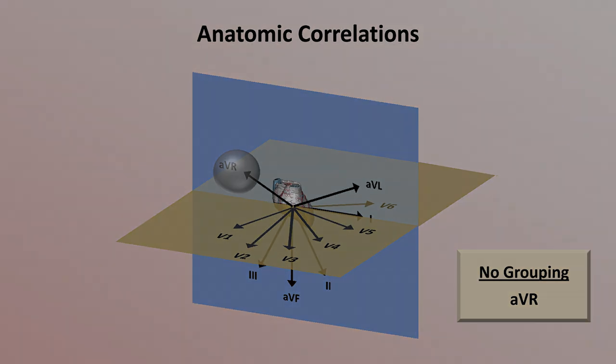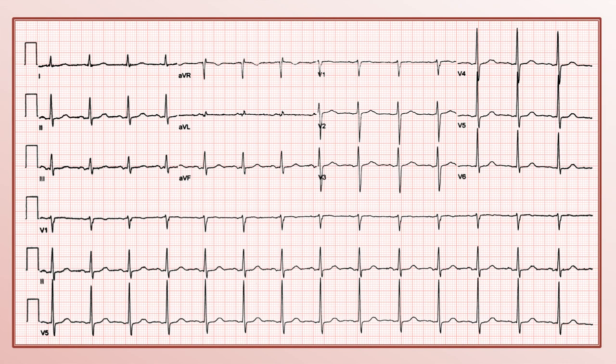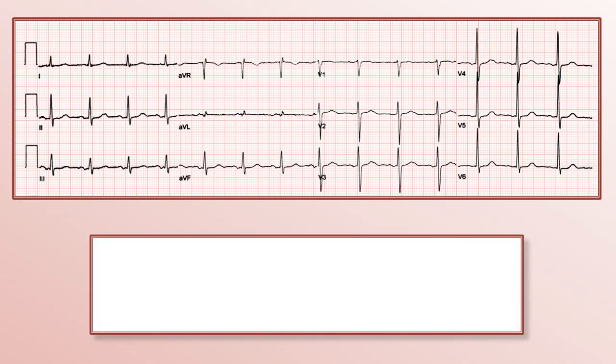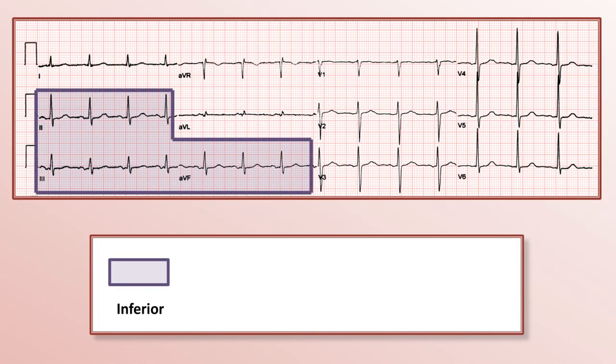I'm going to end this lecture by returning to a full 12-lead EKG to review the anatomic correlations in this format. Once again, leads 2, 3, and AVF are the inferior leads.